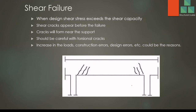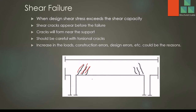Shear failure. Beams are normally designed for shear, so we provide shear links. But if the load exceeds what was designed for, or if the reinforcement is not provided correctly, the beam may fail in shear. Shear failure cracks appear in an inclined direction. We should distinguish these cracks from torsional cracks, because torsional cracks show a similar pattern. These failures could occur due to construction error, design error, or construction defects.